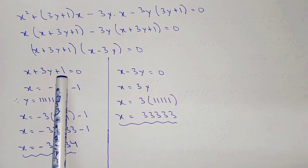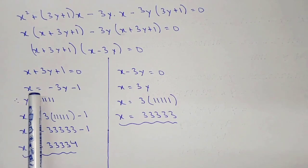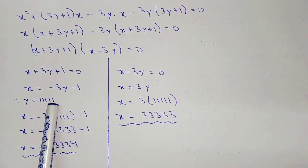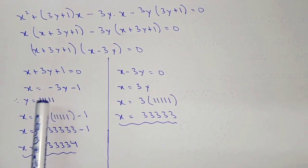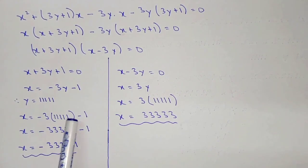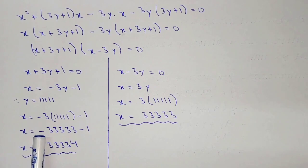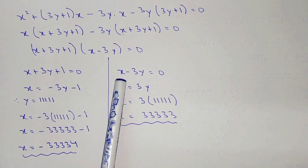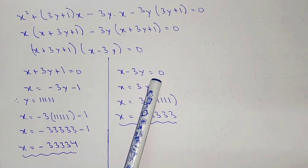Now we have two equations. From x plus 3y plus 1 equal to 0, x equals minus 3y minus 1. Since y equals 5 times 1, substituting: x equals minus 3 into 5 times 1, minus 1. So x equals minus 5 times 3.333... (that value).